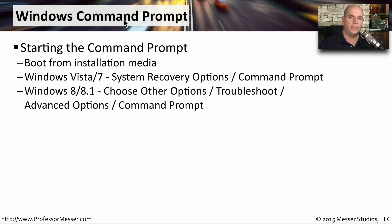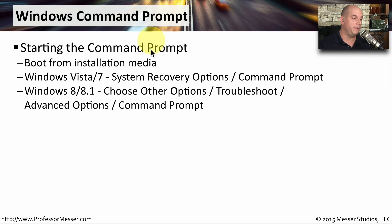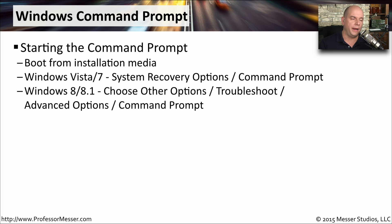When you want to repair problems with the master boot record or a volume boot record, you need to make those repairs before the operating system loads. But if you don't have the operating system loaded, how do you make the repairs? You do that by using the Windows command prompt, available by booting from the installation media for your operating system. You'll need your install disks for Windows Vista, Windows 7, or Windows 8 or 8.1. For Vista and Windows 7, you get to the command prompt through the system recovery options.